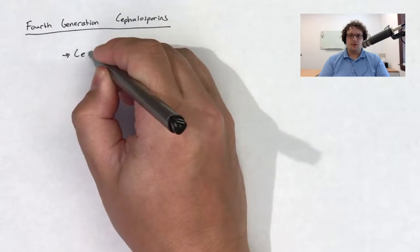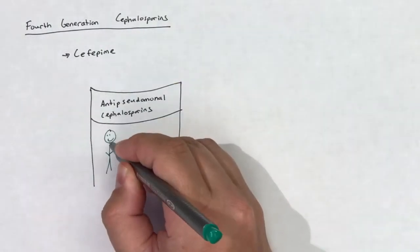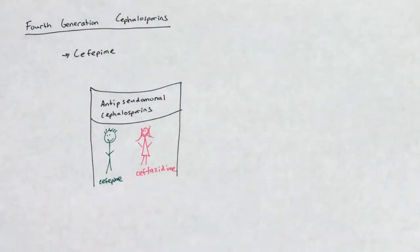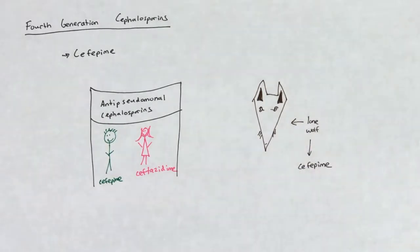There is only one fourth-generation cephalosporin, and that drug is cefepime. Cefepime is sometimes grouped with ceftazidime as antipseudomonal cephalosporins, but for the sake of these classifications, cefepime remains the only fourth-generation cephalosporin.